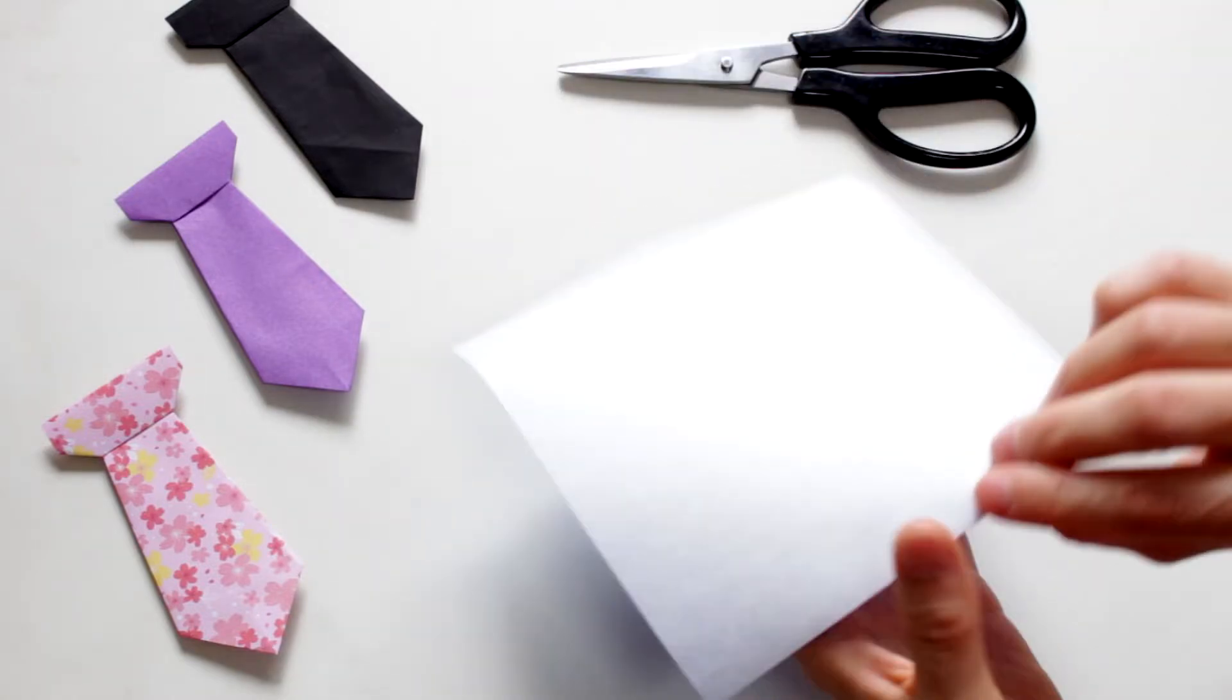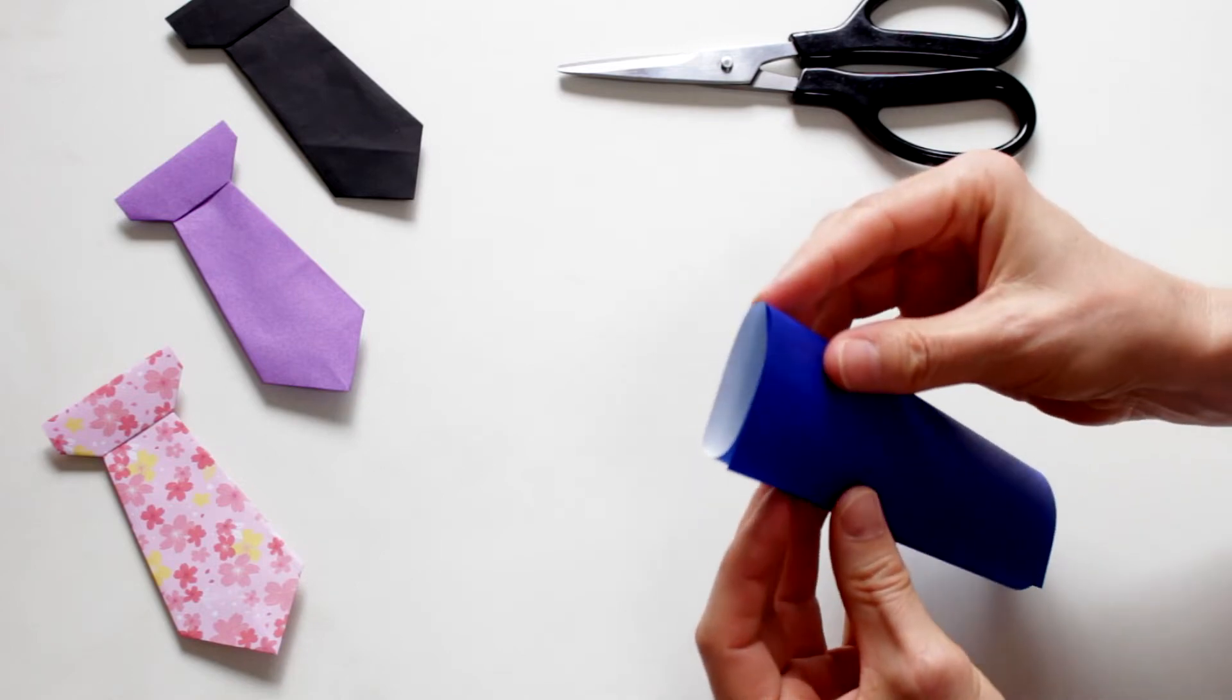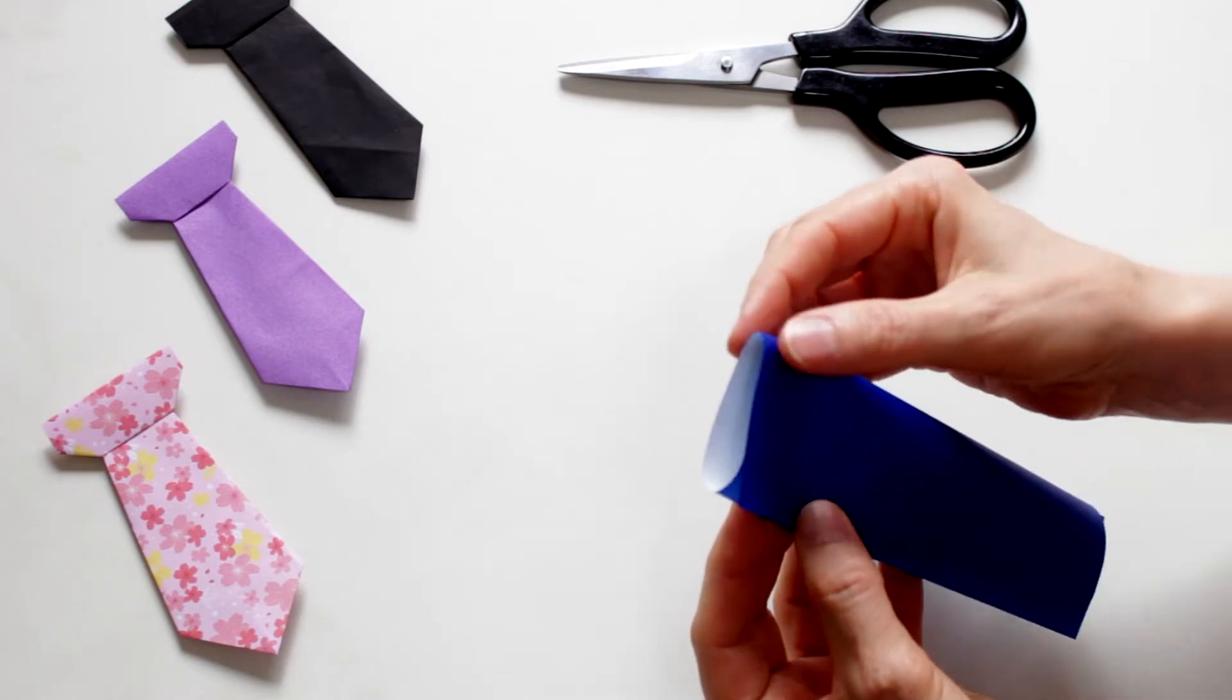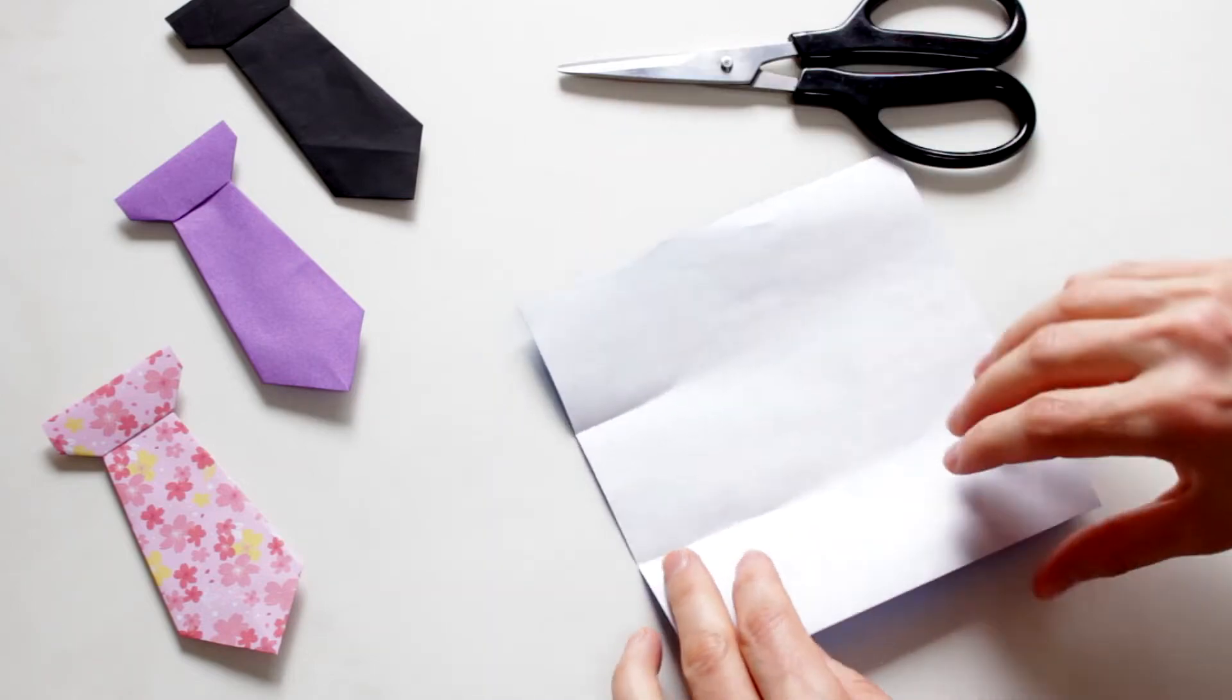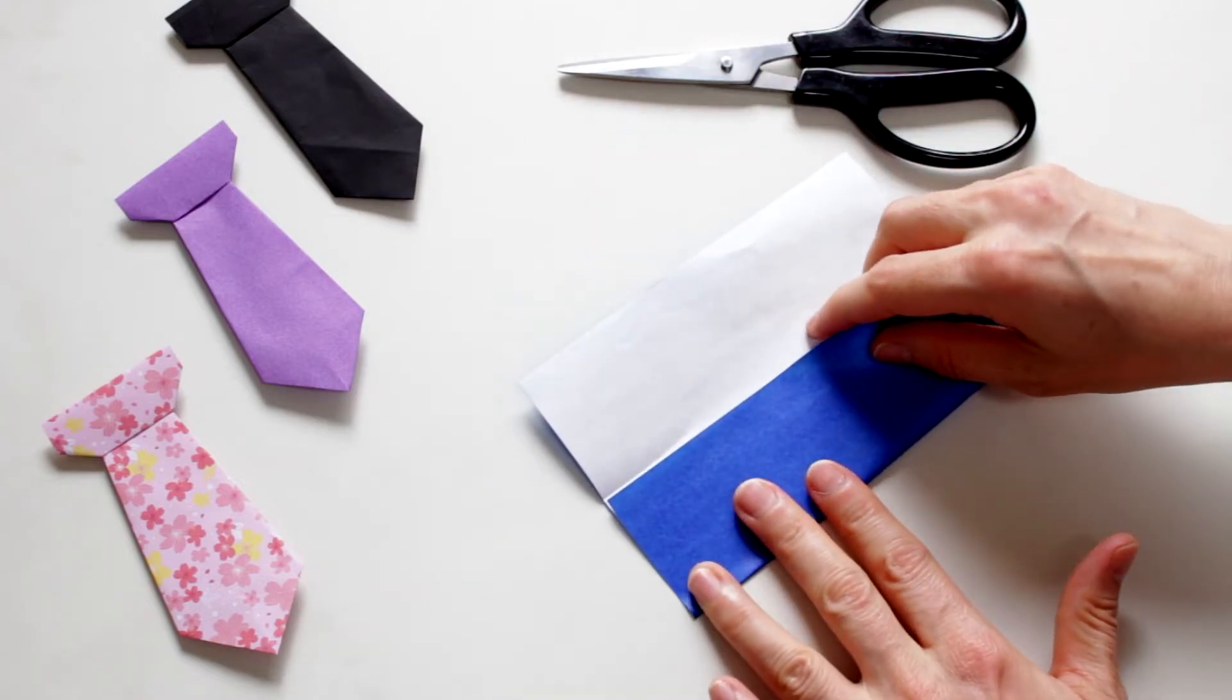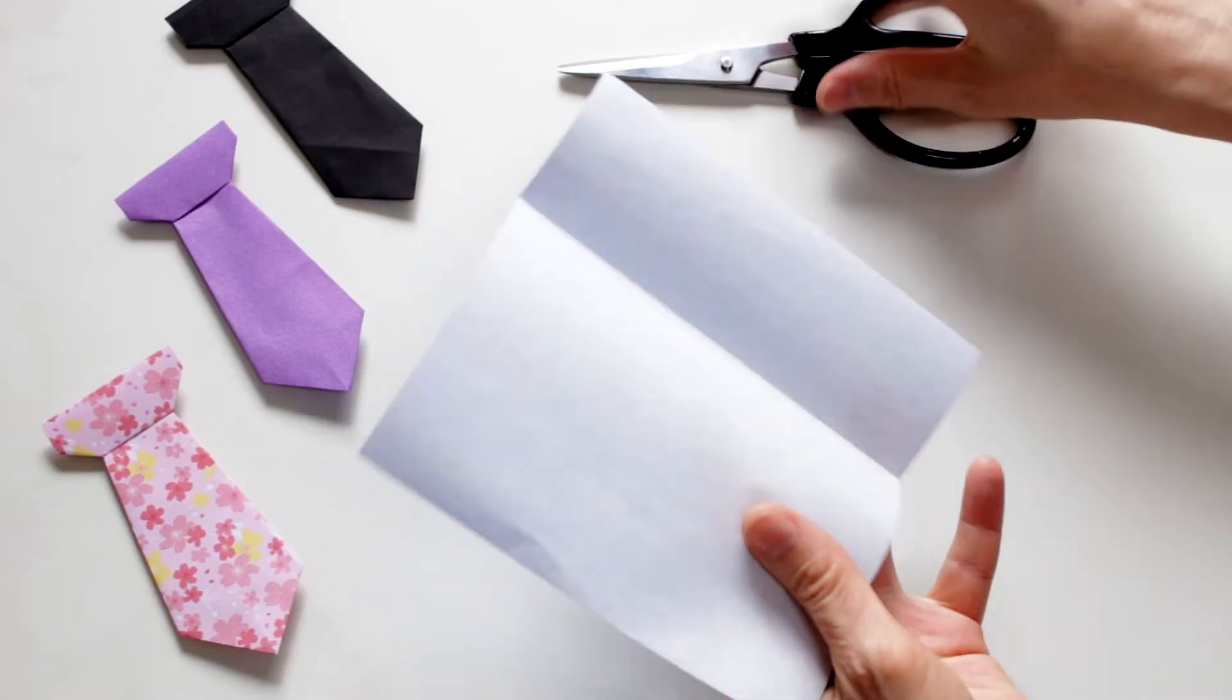We're gonna need one third of the origami paper, so I'm gonna fold it into thirds and we're gonna cut one third.